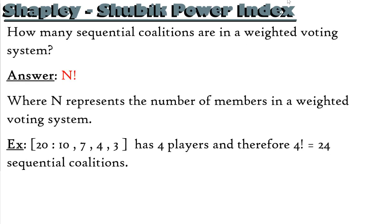So how many sequential coalitions are there in a weighted voting system? A sequential coalition means that all players will be a member of every team — they just join it in a different order. To find the different orders, we'll use N factorial, where N is the number of members in the weighted voting system.